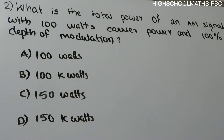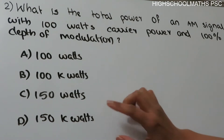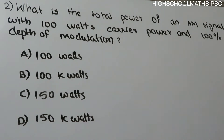Second question: What is the total power of an AM signal with 100 watts carrier power and 100% depth of modulation? Option A: 100 watts, Option B: 100 kilowatts, Option C: 150 watts, Option D: 150 kilowatts. Now, we need to find the power of the amplitude modulated signal.